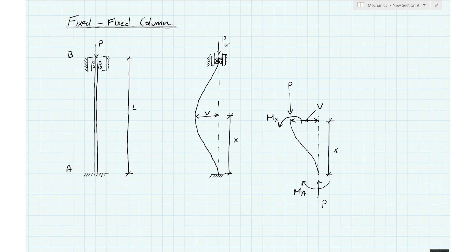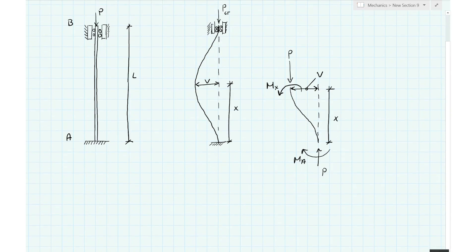We again have our deflected shape or our buckled shape in the middle diagram, and then again making a cut up at some position x along the column, we have revealed an internal bending moment and an internal axial force. That's our free body diagram. Exact same procedure as before, and in fact we're going to abbreviate this derivation somewhat because it is so similar to what we've looked at before.